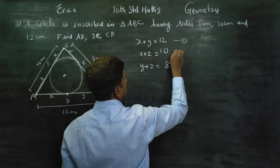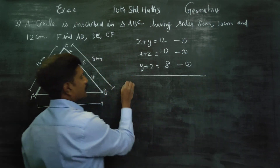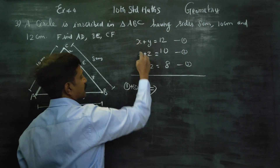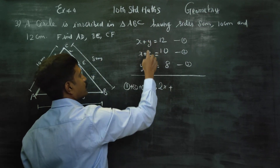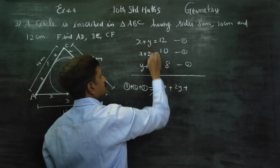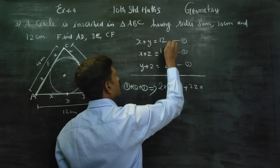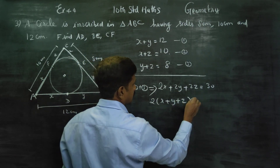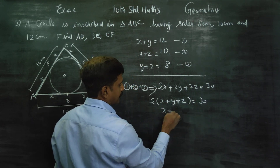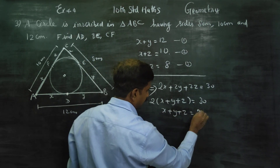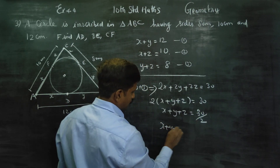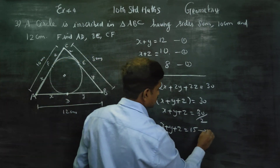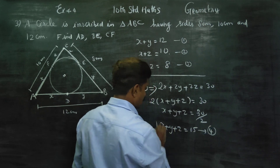These are equations 1, 2, and 3. Adding all three equations together: 2x plus 2y plus 2z equals 12 plus 10 plus 8, which is 30. Taking 2 as common, x plus y plus z equals 30 divided by 2, so x plus y plus z is equal to 15. This is equation number 4.